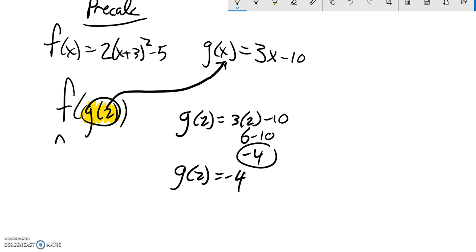So this g of 2 is what I'm plugging into f, and it is a negative 4. So notice I plug the 2 into g, it spits out a negative 4. That gets plugged into the f.